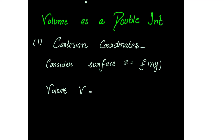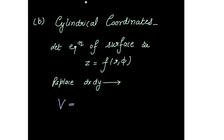Before starting the solution, let's have a look at the formulas. The volume uses a double integral. For Cartesian coordinates, let's consider the surface z equal to f of xy. Then the volume V is given by the double integral over region R of z dx dy.